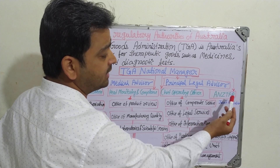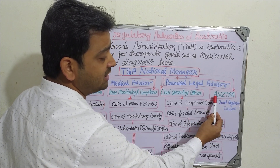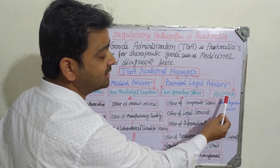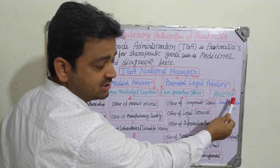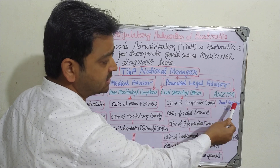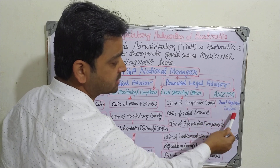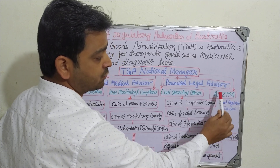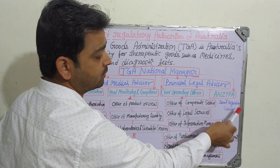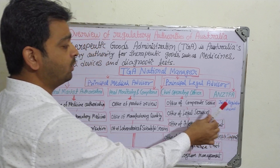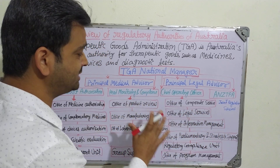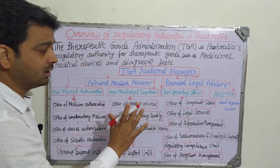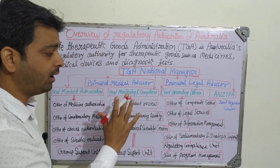There is also the ANZTPA — the Australia and New Zealand Therapeutic Product Agency — which is a joint regulation scheme for both countries. Let's understand what each of these groups does.